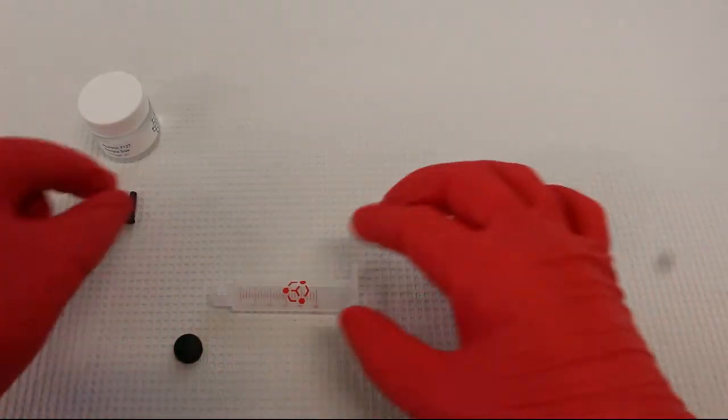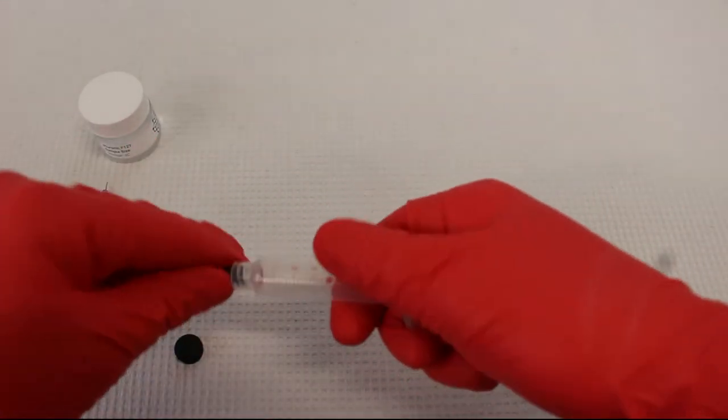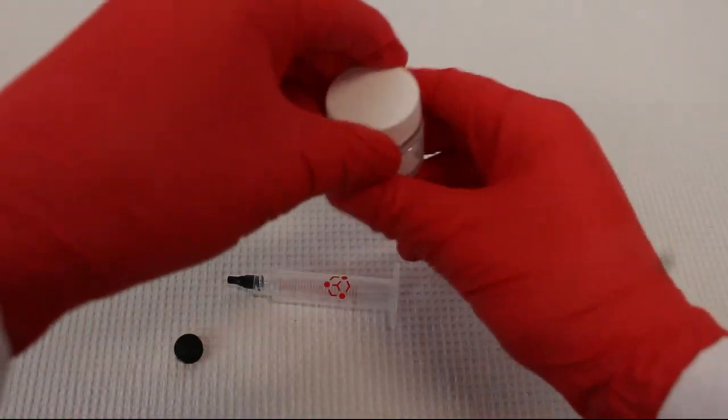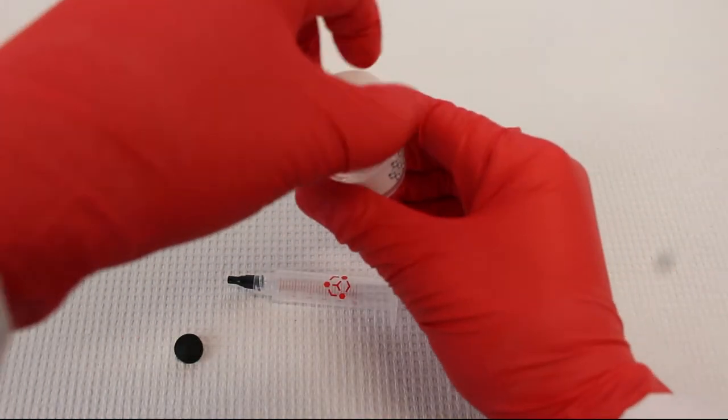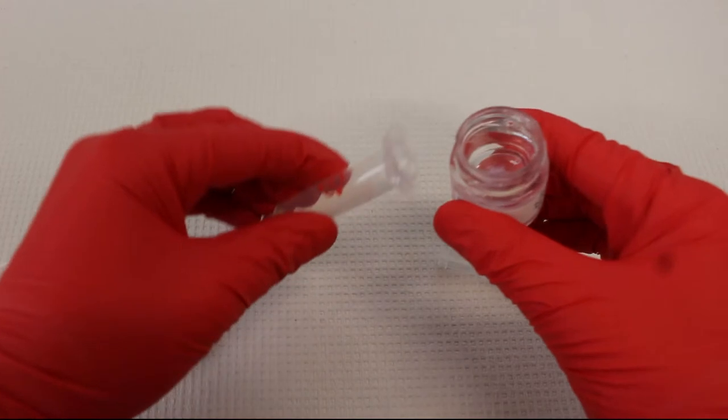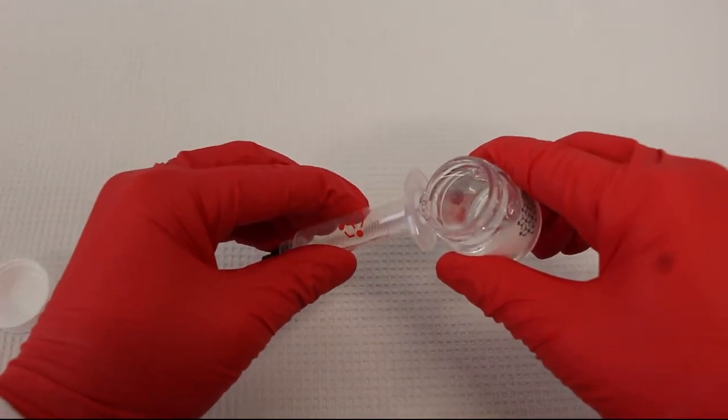First, remove the plunger from the syringe and the black stopper from the plunger. Add a syringe cap to the syringe, then pour pleuronic into the syringe. We suggest loading about 3 mLs.